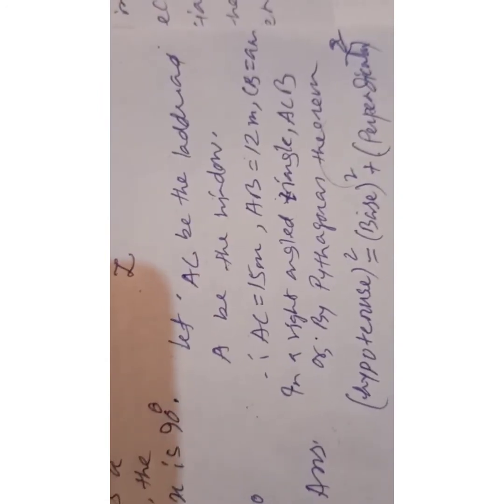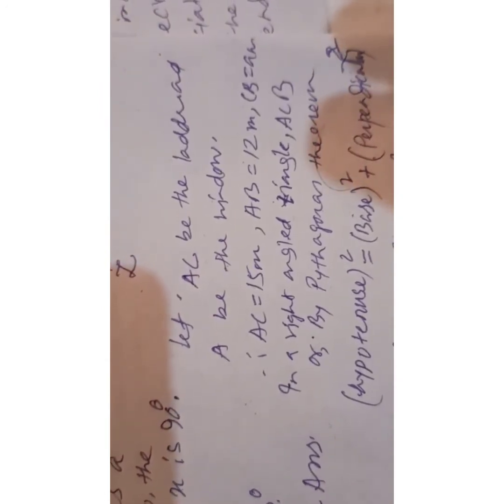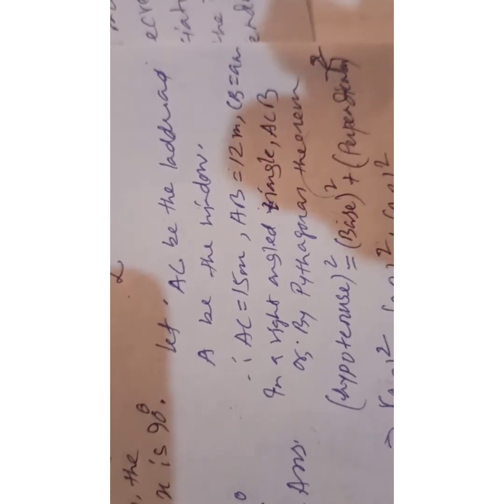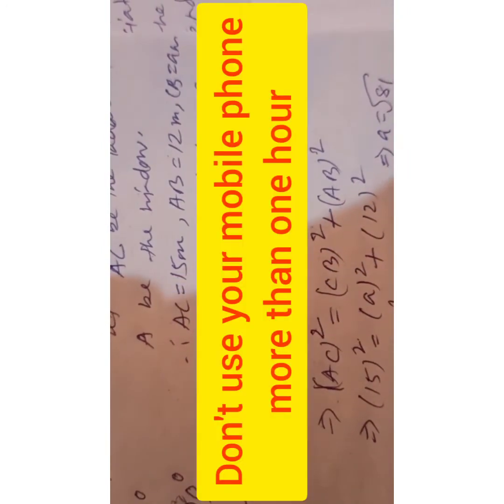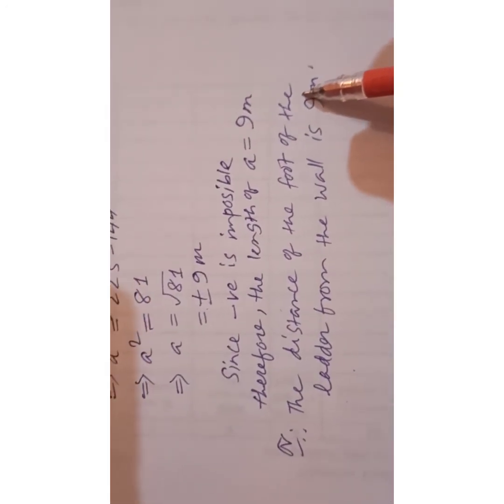You can also solve it like this: Let AC be the ladder and AB be the window. AC = 15 meters, AB = 12 meters, and CB = a meters. Using Pythagoras theorem: AC² = CB² + AB². Putting the values: 15² = a² + 12². Taking the plus value, we get a = 9 meters.